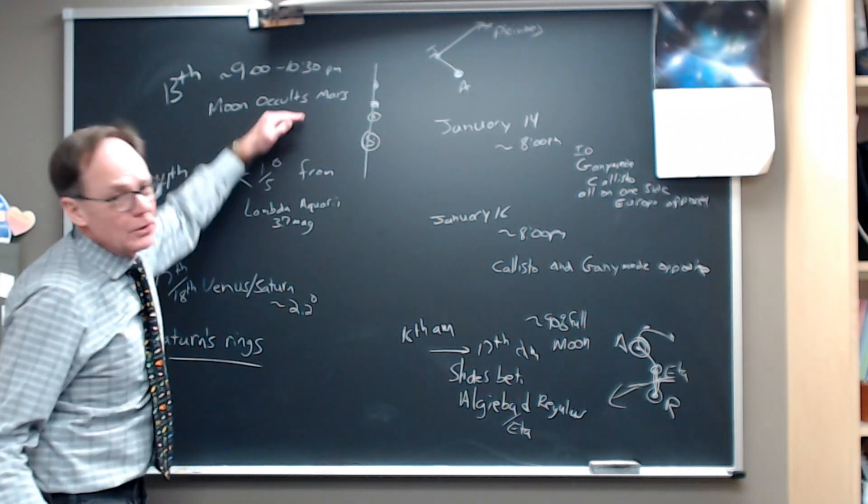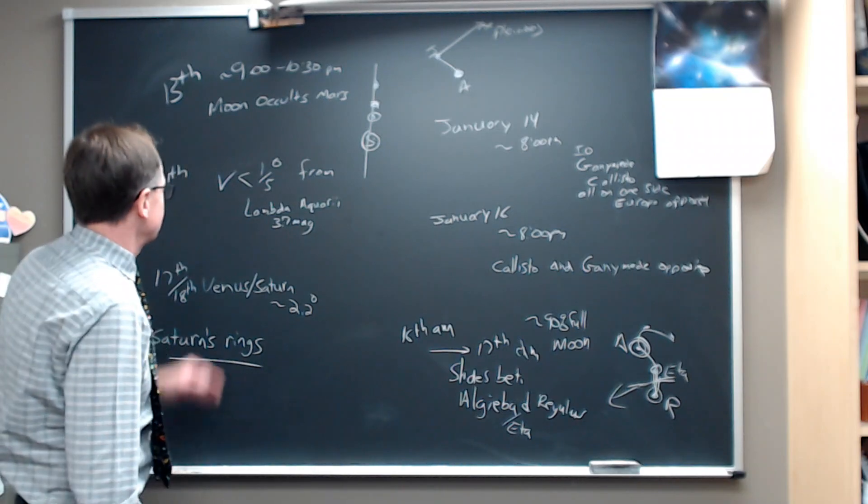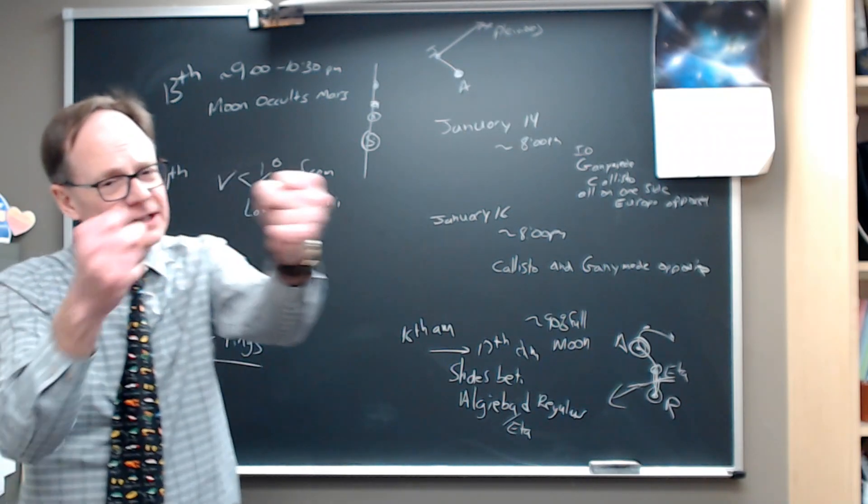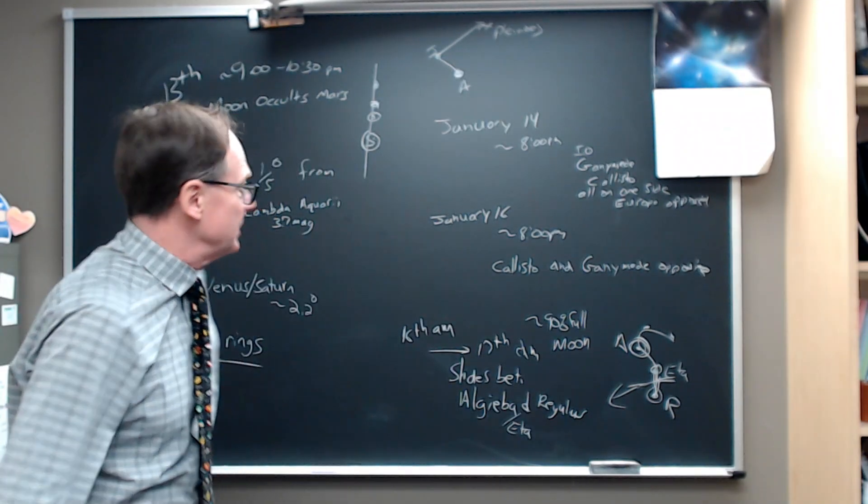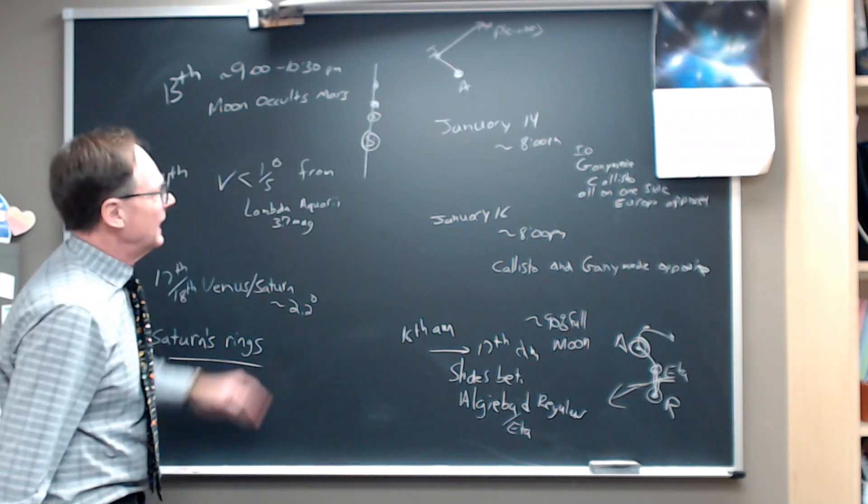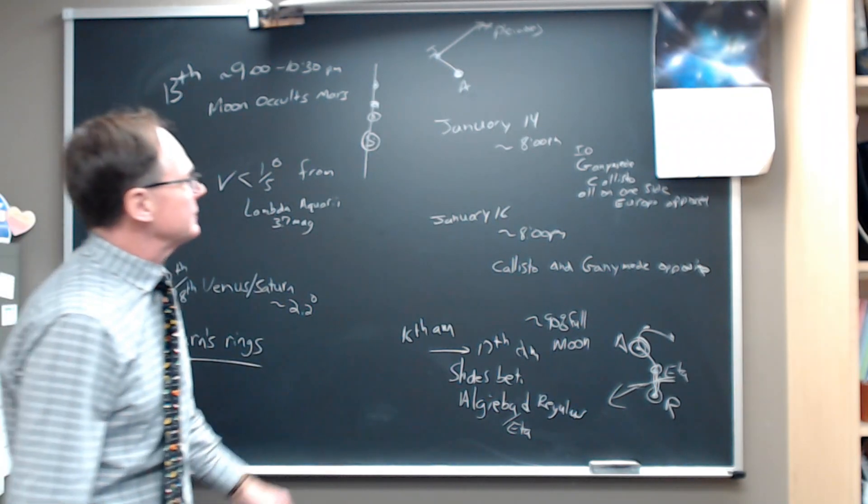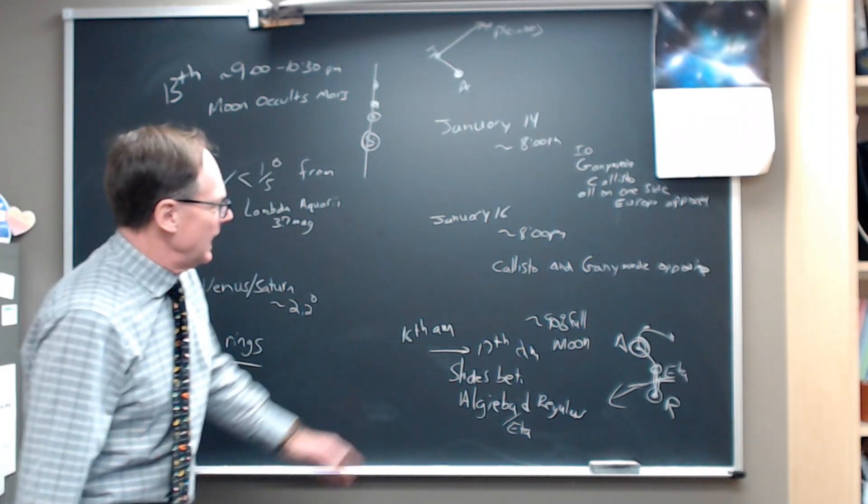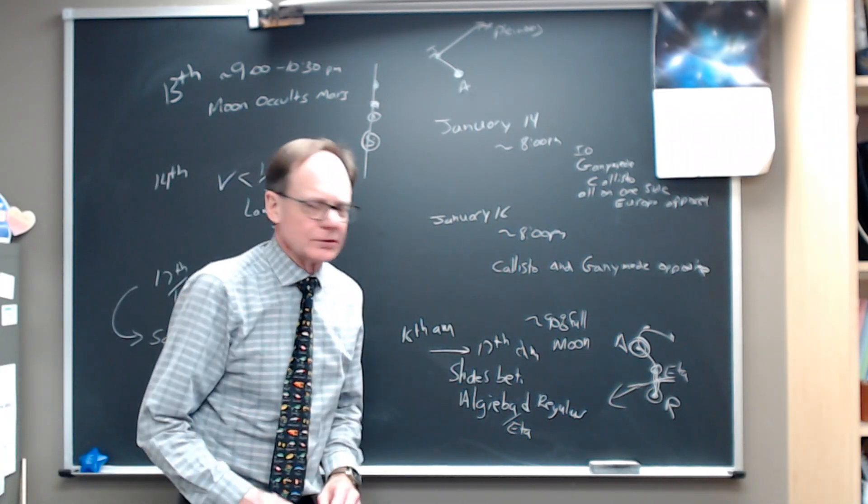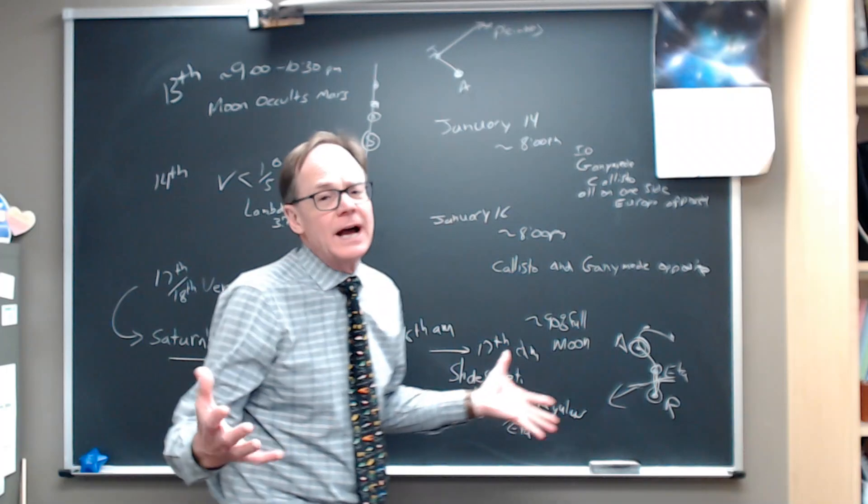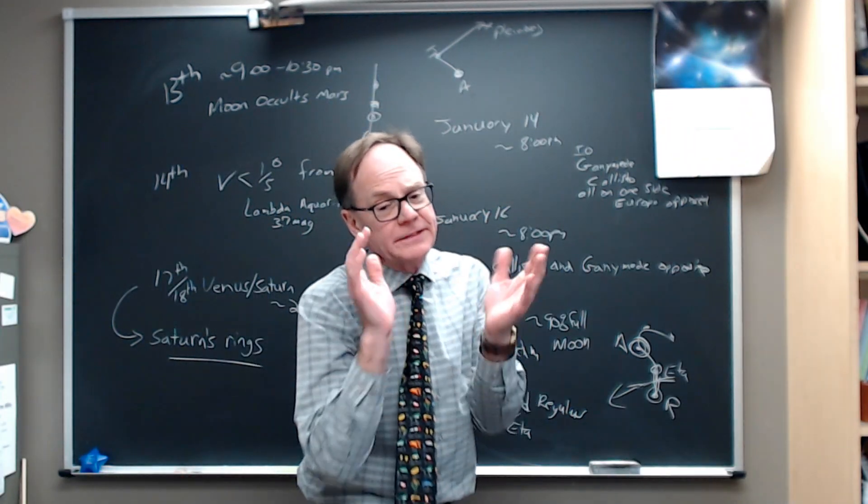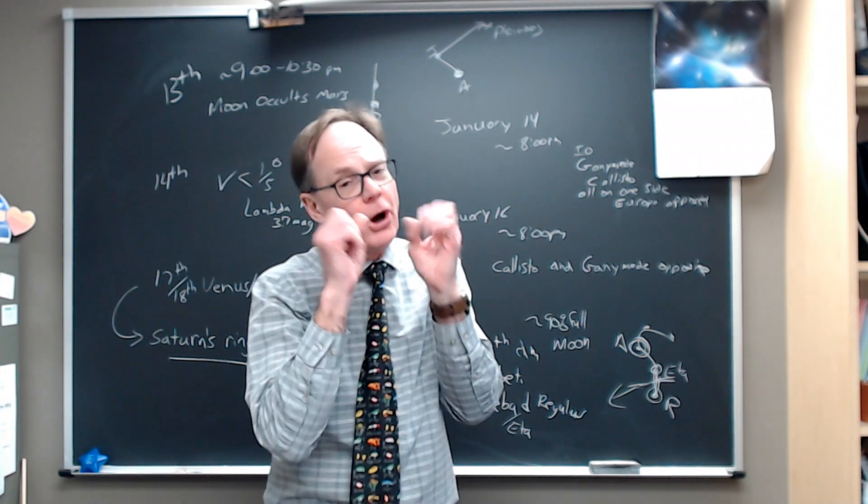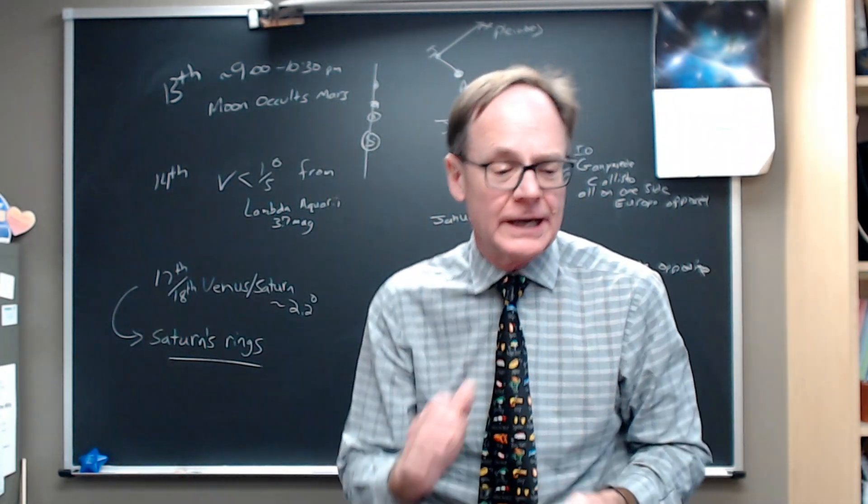That's what we've got for you this week. The moon occulting Mars is the big deal. Venus and Saturn in conjunction, getting as close as they can get. Venus sliding near a bright star. Think about the rings of Saturn and the moons of Jupiter, and you've got the moon in Leo to end the week. As always, thanks for watching, and we hope you have a great observing week ahead.